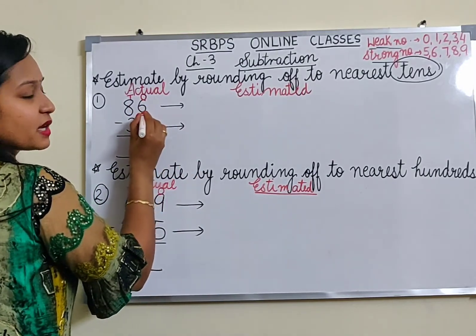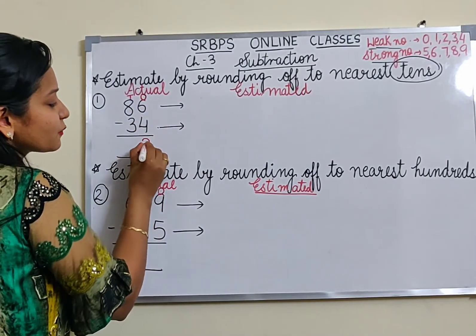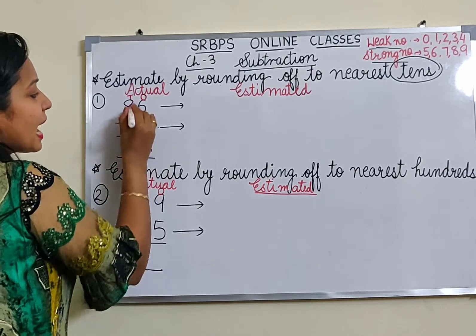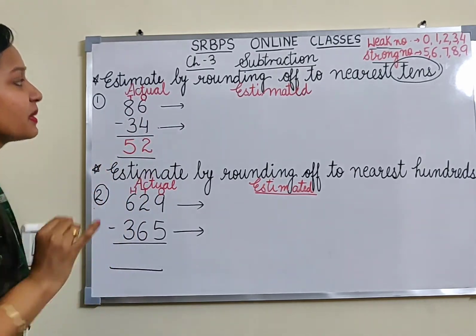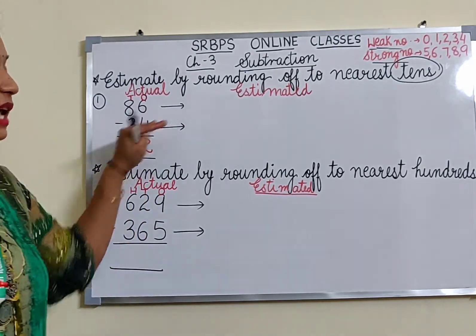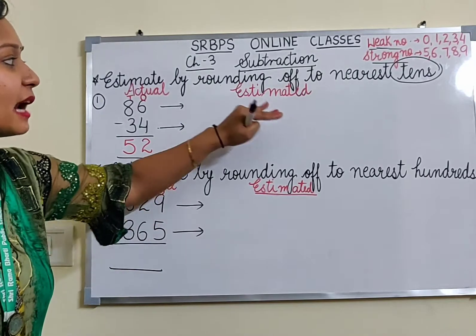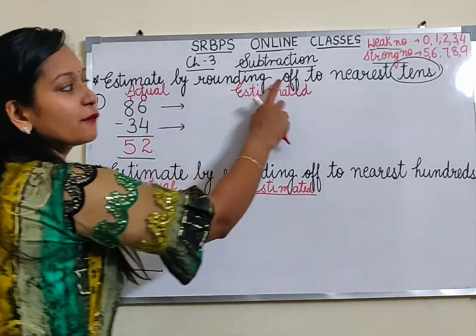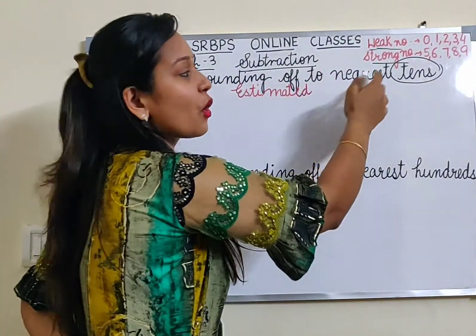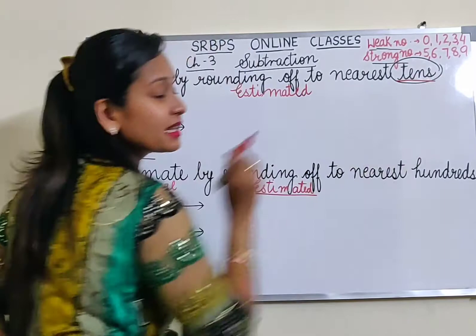Let's first do the actual subtraction. 6 minus 4 is 2 and 8 minus 3 is 5. So our actual difference is 52. Now for estimation, we first have to round off to nearest tens.